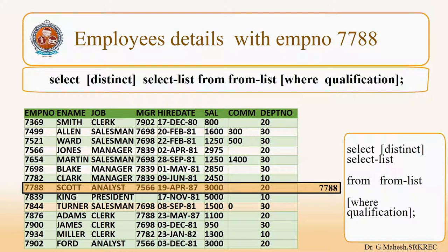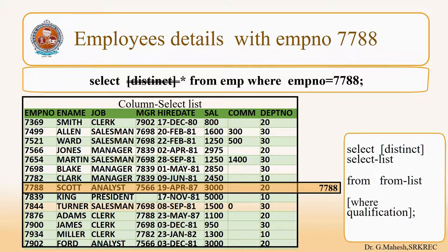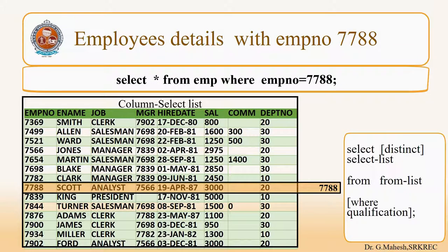Now the query is employee details with employee number 7788. Only one employee is there with employee number 7788, that is Scott. For selecting that row, you have to use the condition EMPNO = 7788. You use STAR in the selection list and EMP in the FROM clause. The command is SELECT * FROM EMP WHERE EMPNO = 7788. Observe the result, which is highlighted.